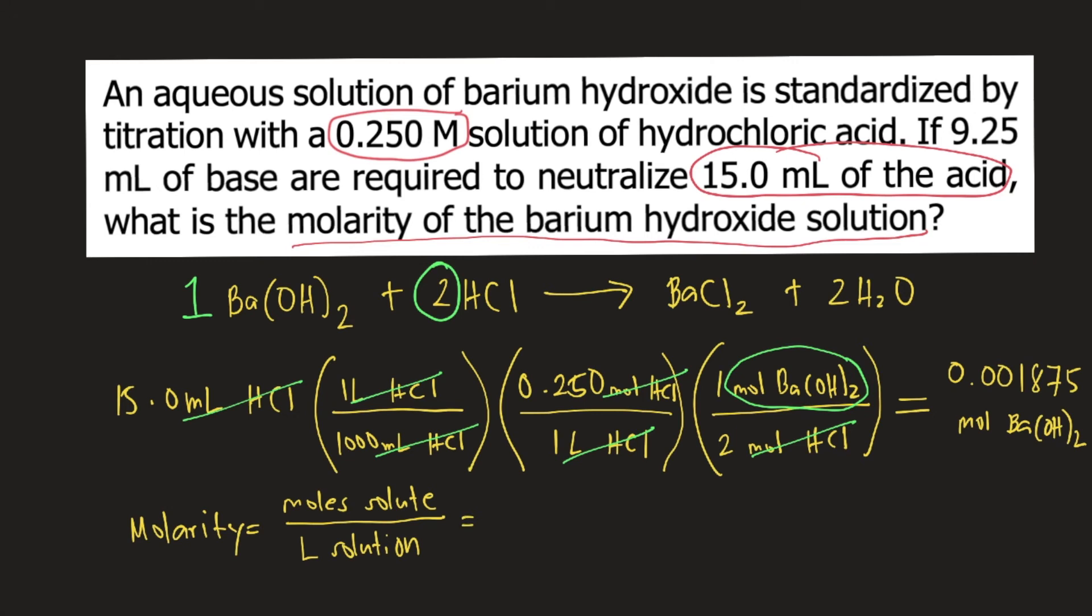We already computed for the moles of barium hydroxide previously. It is equal to 0.001875 moles divided by the liters of solution. What is the volume of the barium hydroxide solution in the problem? According to the problem, it's 9.25 mL.